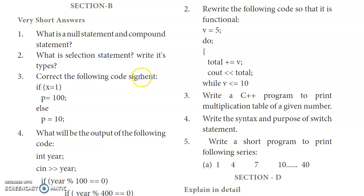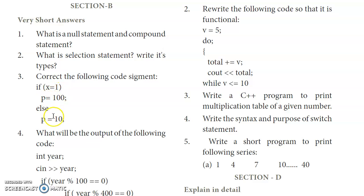Third question: correct the following code. Looking at the if-else statement, the condition is written as x = 1. There is an error here — the equal-to sign is an assignment operator, but in a condition we need the equality operator, which is double equal-to (==). So the correction is to change x = 1 to x == 1.